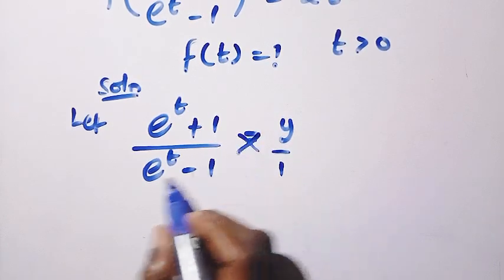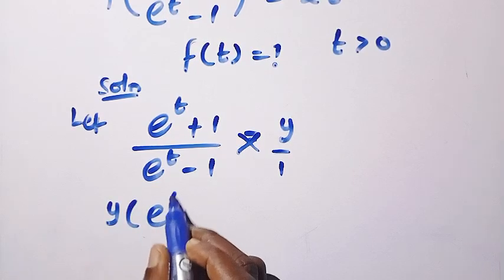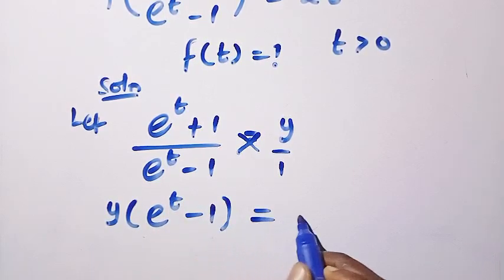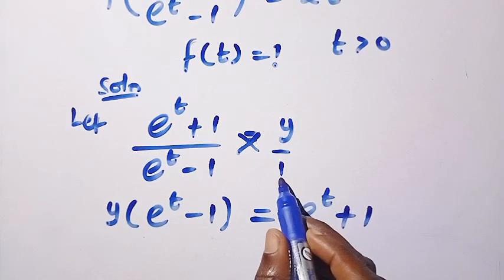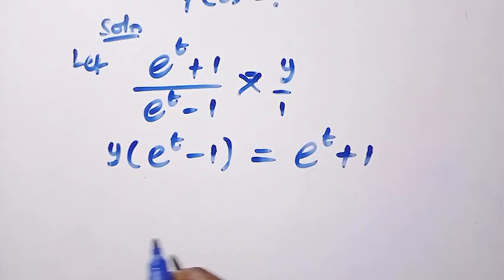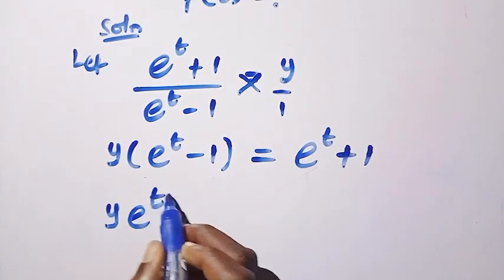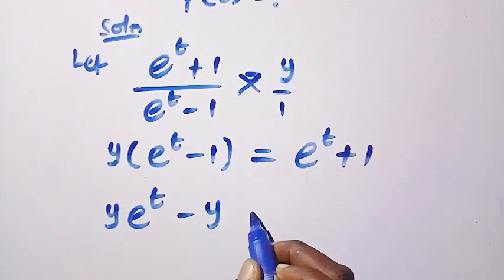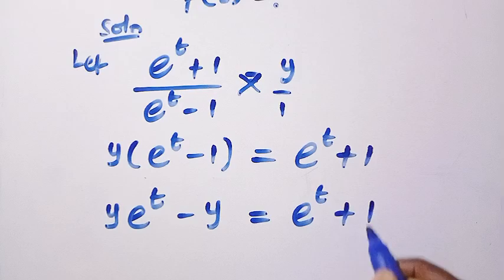By cross-multiplying, we have y(e^t - 1) = e^t + 1. Let's open the bracket. So y multiplied by e^t gives ye^t minus y times 1, that is y, equals e^t + 1.